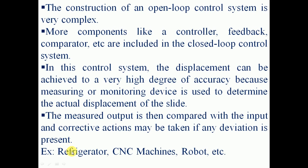Examples of closed loop control systems include the refrigerator, CNC machines, and robots. In a refrigerator, a compartment is cooled to a required temperature lower than the outside atmospheric temperature. Whenever the temperature reaches the required level, it sends a signal to the controller to switch off the refrigerator. When the temperature rises above the required level, it sends a signal to switch the refrigerator back on. The output — temperature — is compared with the set input temperature, and switching on and off takes place accordingly. Similarly, this happens in CNC machines and robots.